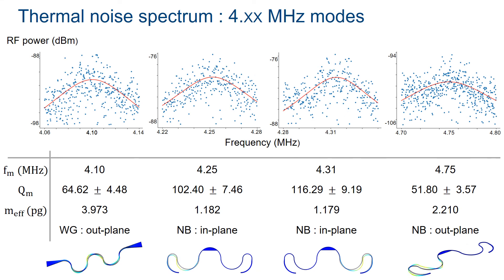A similar exercise is performed for the thermal noise spectrum obtained between 4 and 5 megahertz. Here too, we observe four different thermal peaks as shown in the plots. The corresponding mechanical frequency, mechanical quality factor, effective mass, and the mechanical mode profiles are tabulated. We have an out-of-plane waveguide mode at 4.1 megahertz, an in-plane nanobeam mode at 4.25 and 4.31 megahertz, and an out-of-plane nanobeam mode at 4.75 megahertz.